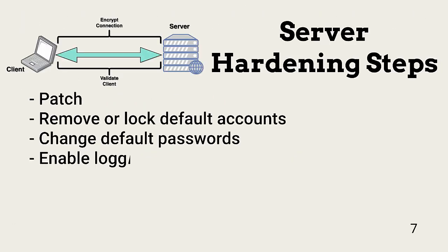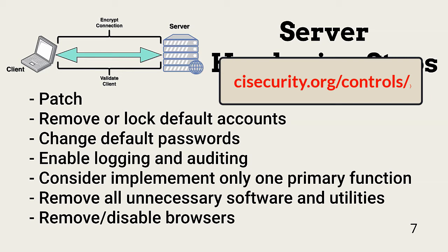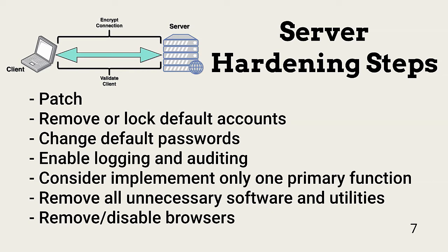Hardening servers begins with following best practices like those found in security frameworks. A good start for managing both server and client vulnerabilities is implementation of the CIS-18 critical controls. You can download the controls document from the link shown. Common server hardening steps reduce server attack surfaces, including patching, removing or locking default accounts, changing default passwords, enabling logging and auditing to detect threat actors, and considering implementation of only one primary function per server. This minimizes the server's attack surface because all other software and drivers can be removed or disabled, and browsers can be removed or disabled as well.